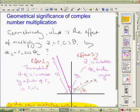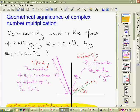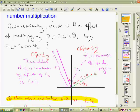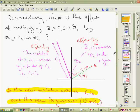This is a part looking at the geometrical significance of multiplying a complex number by another complex number. You'll note that we said in the last section that the effect was first of all on the modulus.